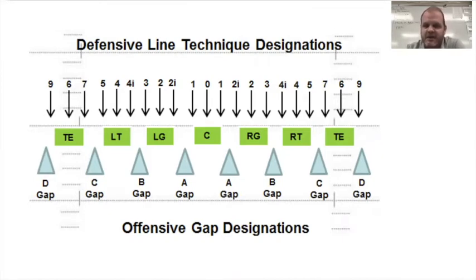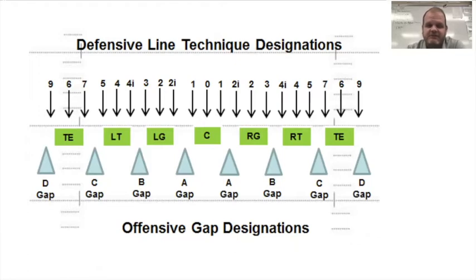If somebody's in a zero technique, that means they're head up with your center, which is usually in a three-four or three-front defense. A one technique means they are shaded to one side of your center — you might hear that called a shade. A two technique is head up with the guard. A two-I means inside of the left guard.